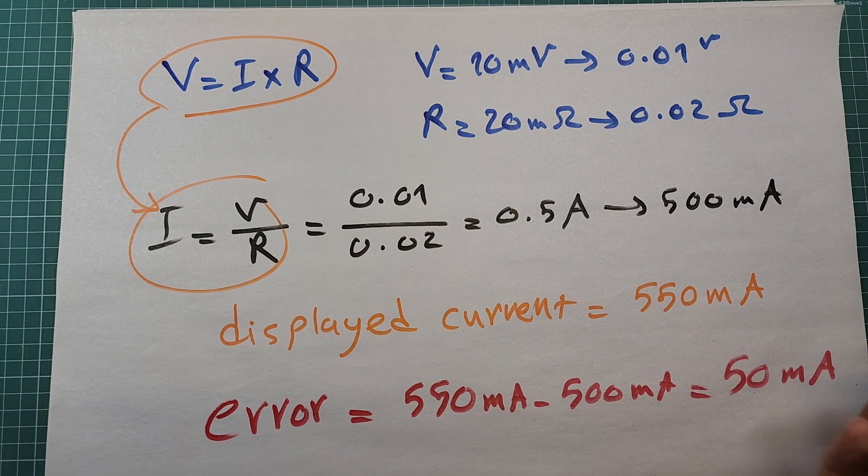Using a shunt resistor to measure current has many advantages: this method is very simple, cheap, and has relatively high accuracy. It can measure very small or very large currents. Another advantage is that in addition to DC currents, it can also measure AC currents.